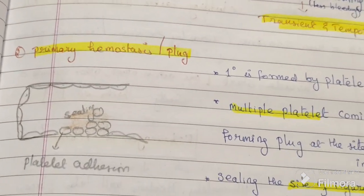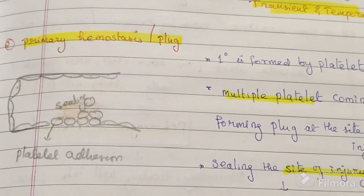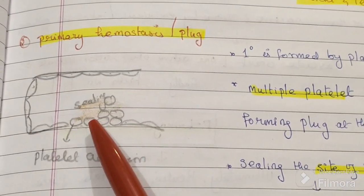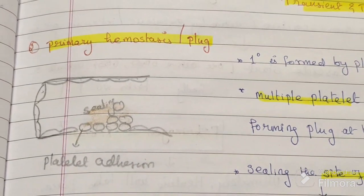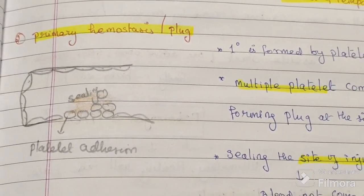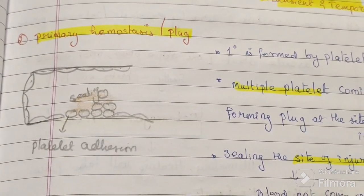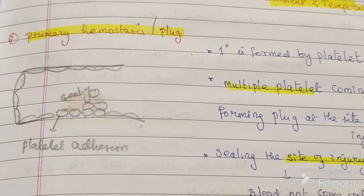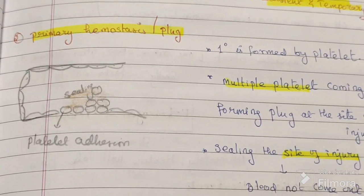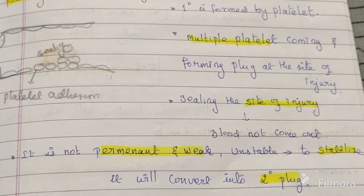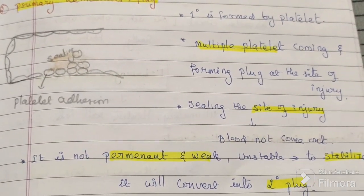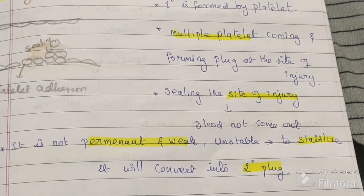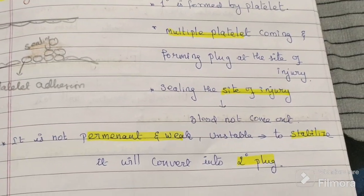The second step is primary hemostasis, or primary clot formation, formed by platelets. Multiple platelets come and form a plug at the site of injury, sealing it so blood does not go out. This restores the integrity at the injury site. However, it is temporary and unstable — it can break down after a few hours — so it must be converted into a secondary clot.